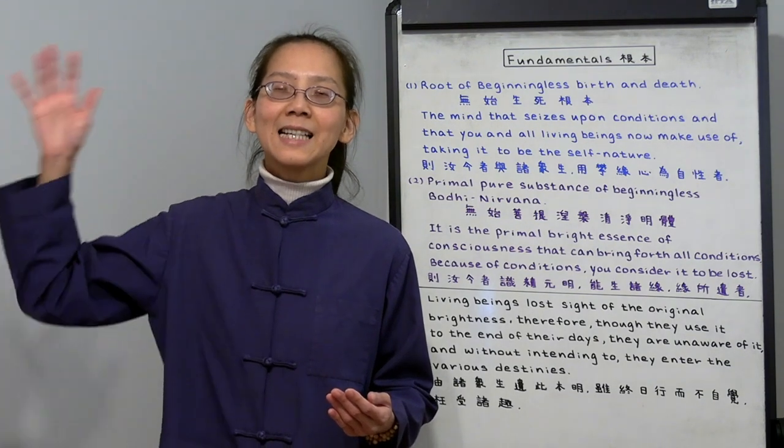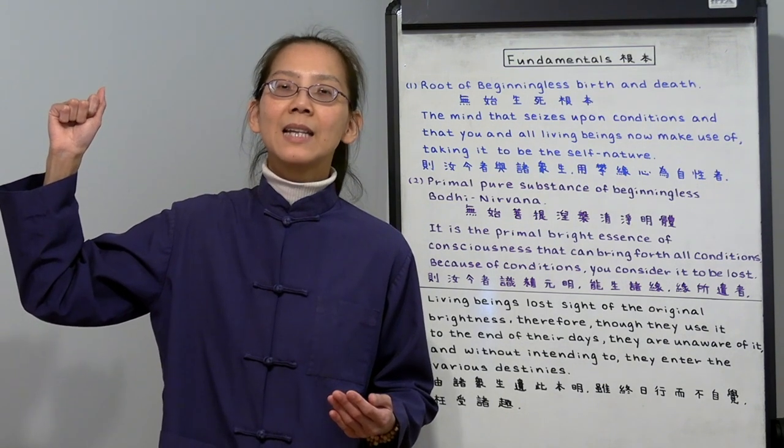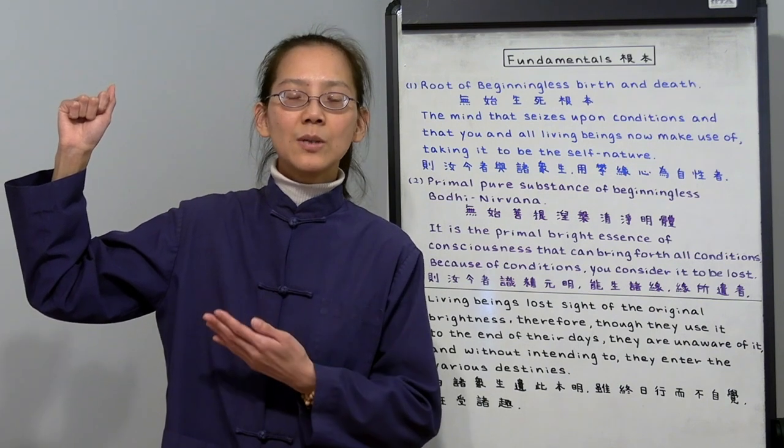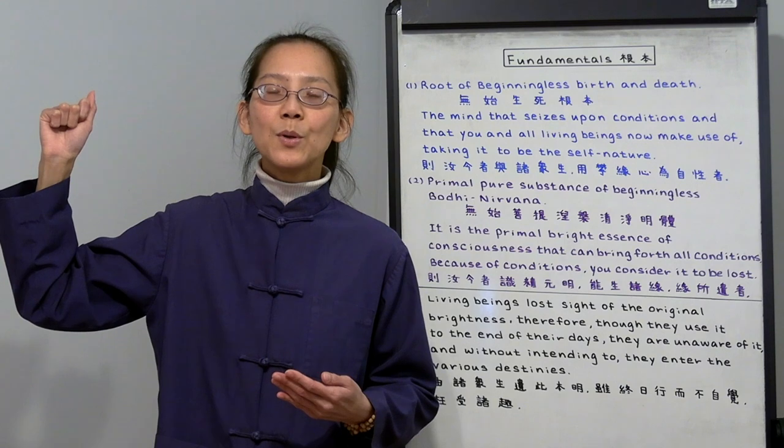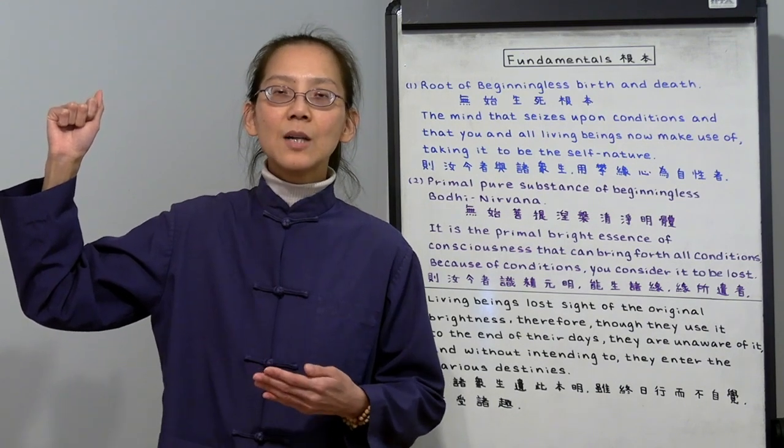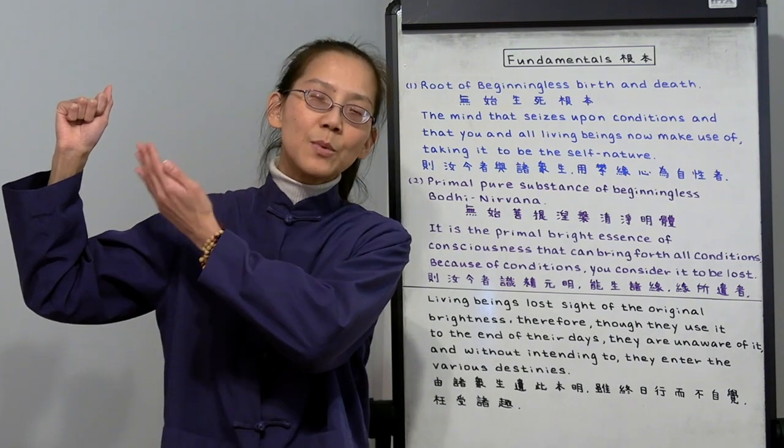Buddha raised his golden arm and bent his five fingers into a fist. Then he asked Ananda, do you see? Ananda replied, yes, I see. Buddha asked, what do you see? Ananda replied, I see your golden arm and the shimmering fist.